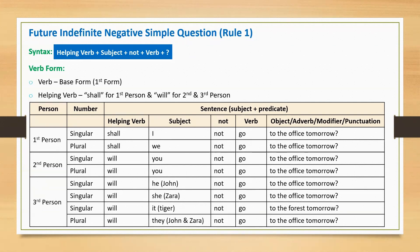'Will she not go to the office tomorrow?' Specifying her name: 'Will Zara not go to the office tomorrow?' 'Will it not go to the forest tomorrow?' — assuming it is a tiger: 'Will tiger not go to the forest tomorrow?' Third person plural: 'Will they not go to the office tomorrow?' With names: 'Will John and Zara not go to the office tomorrow?'